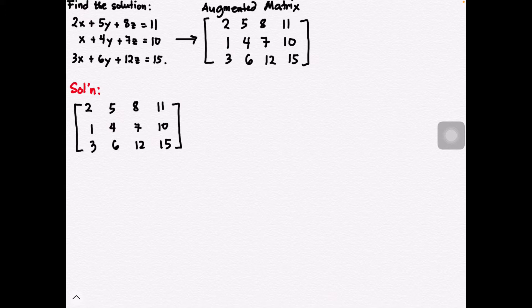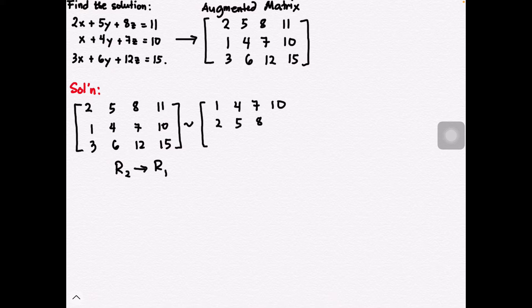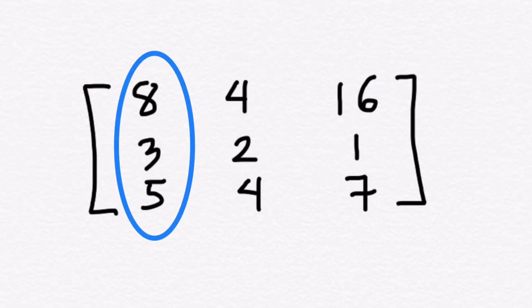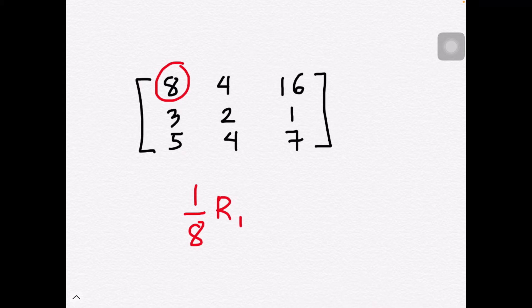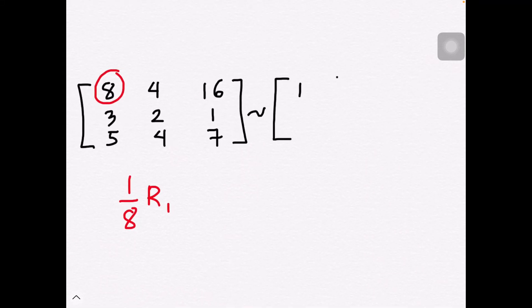That gives you a hint that we have to interchange rows one and two. Note that if you don't have one in the first column, you have to produce one by dividing the entire row by that number. For example, if the first entry is eight and you want it to be one, you divide the entire row by eight.